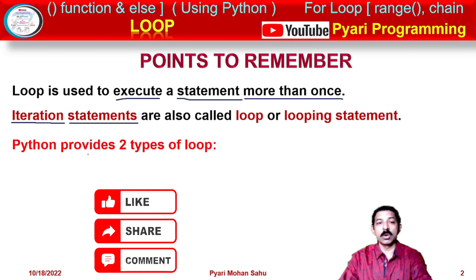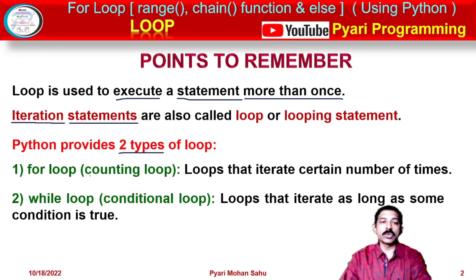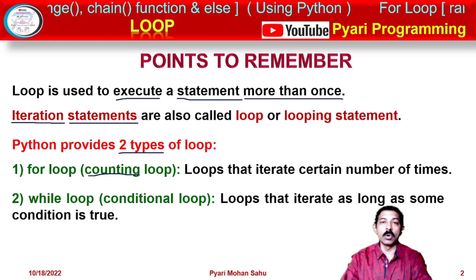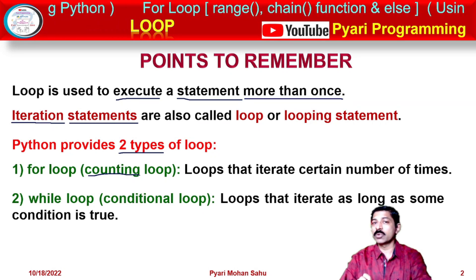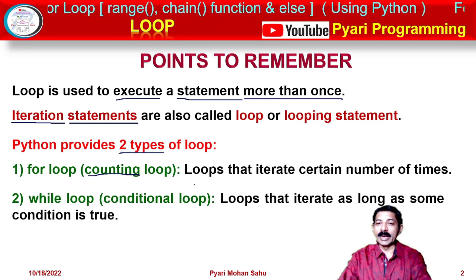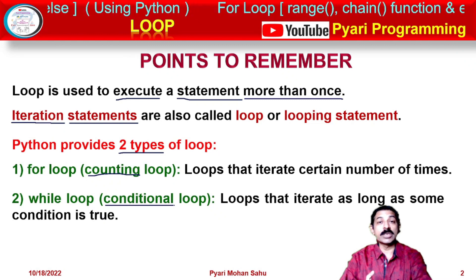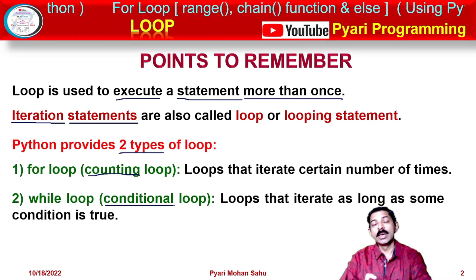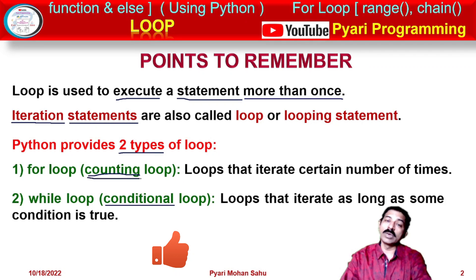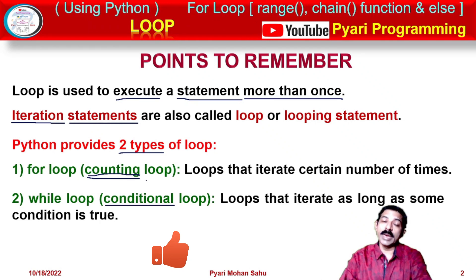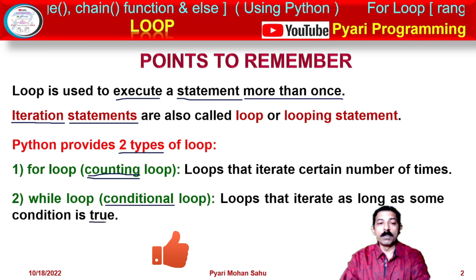Python provides two types of loops: for loop and while loop. The for loop is also known as a counting loop because it iterates a certain number of times — five times, ten times, fifteen times. If I am sure how many times to execute, I will use a for loop. The while loop is called a conditional loop because its iteration is based on a condition — it executes as long as the condition is true.